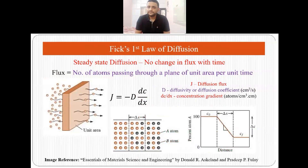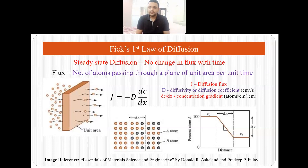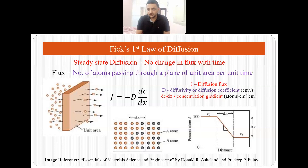Fick's first law of diffusion is applicable in those areas or scenarios where there is a state of steady state diffusion — meaning diffusion is occurring in a steady state. Steady state means that there is no change in flux with respect to time. If we come across this kind of scenario where diffusion occurs but the flux is not changing with time, then we say that it is a steady state diffusion.